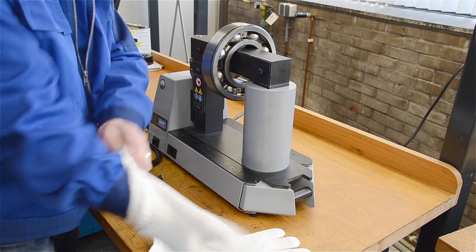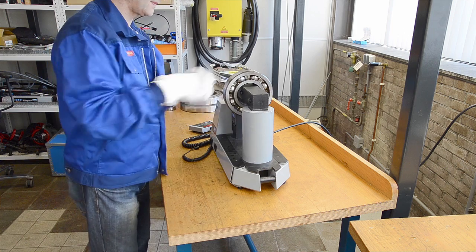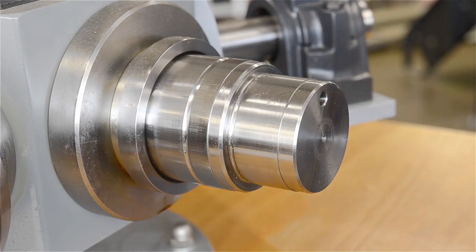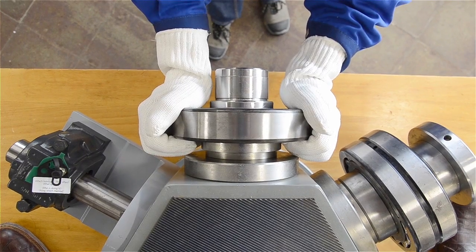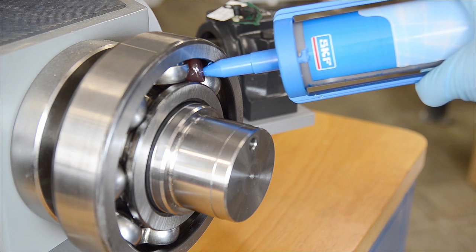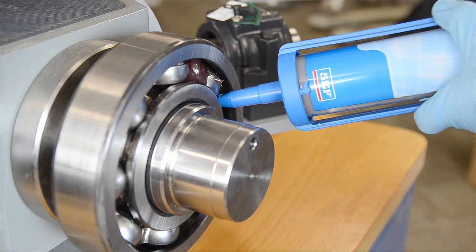Wearing SKF heat resistant gloves, remove the bearing from the heater and place on the shaft. As the bearing cools, a strong interference fit results. Just apply lubrication and the bearing is ready to run.